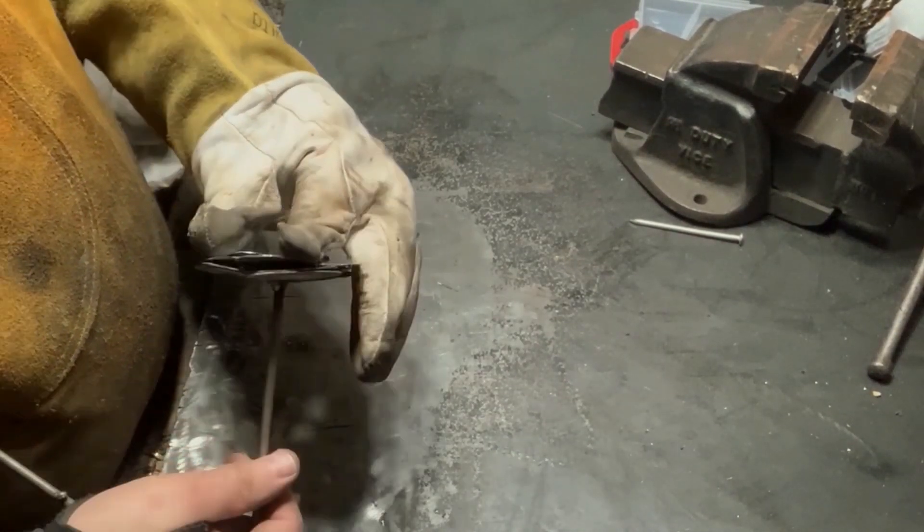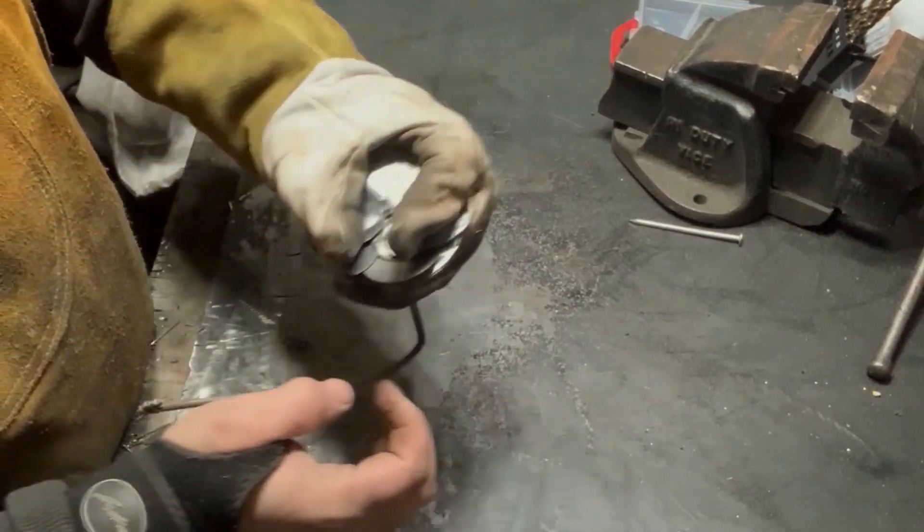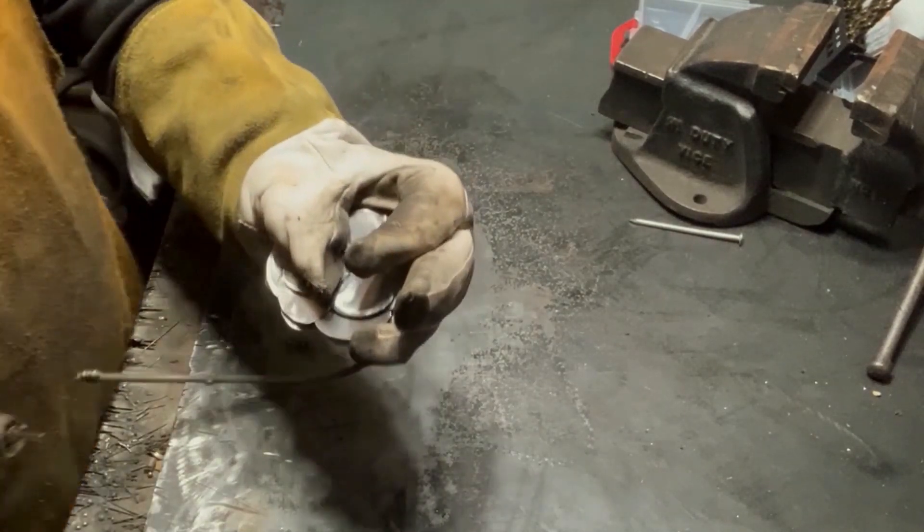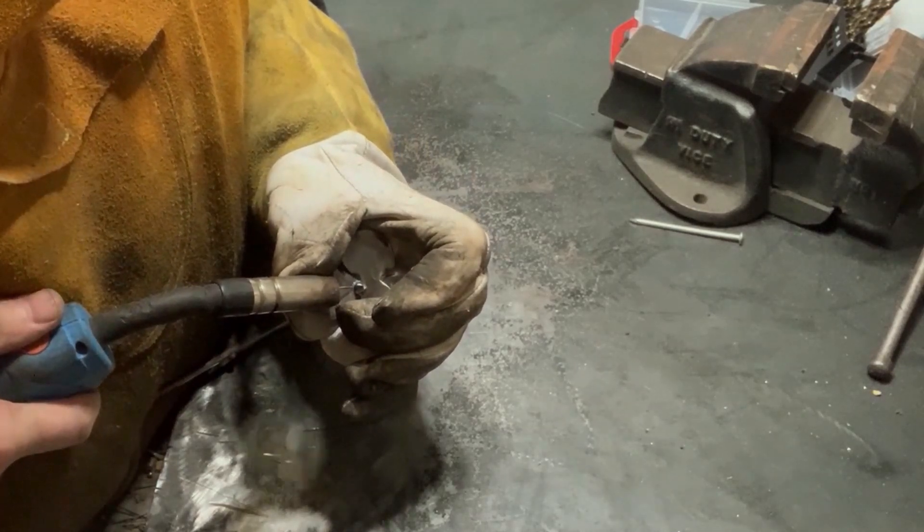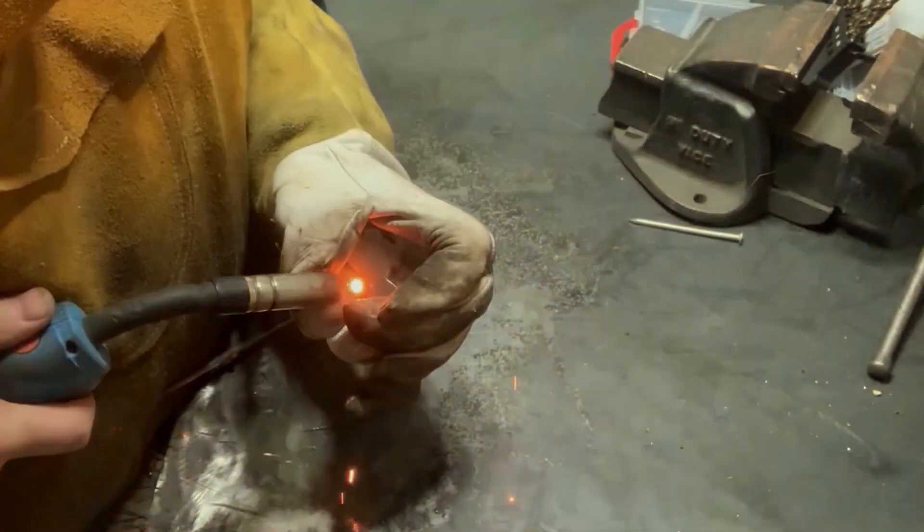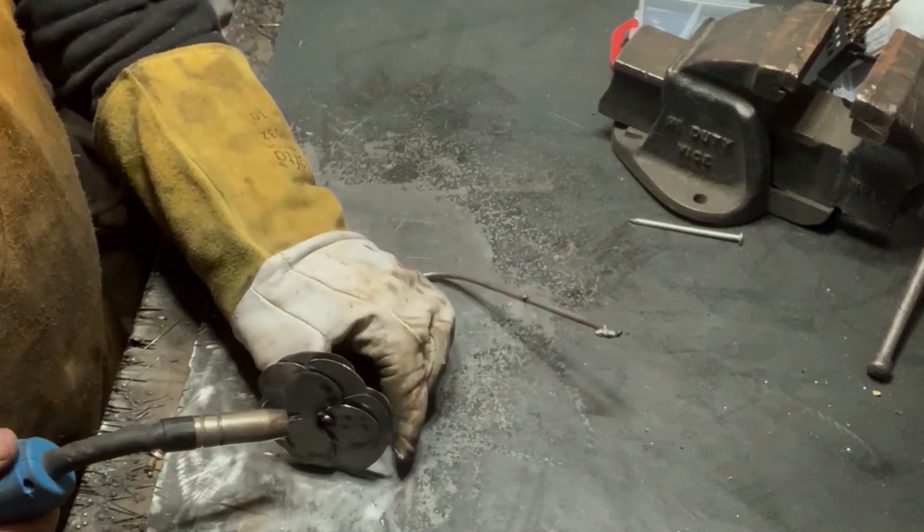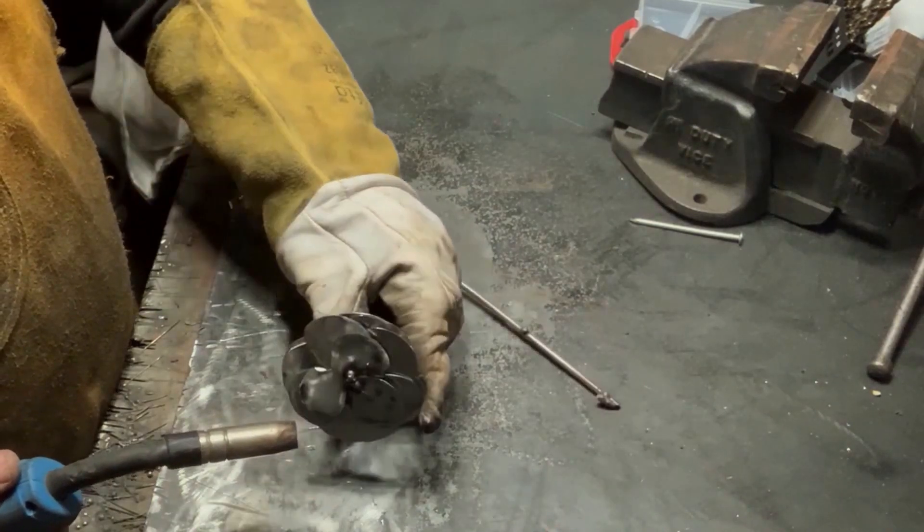Now need to do the same on the top one. Push it down. Remember, you don't want too much weld on there because you want to bend it up. You want enough for it to not come undone obviously.